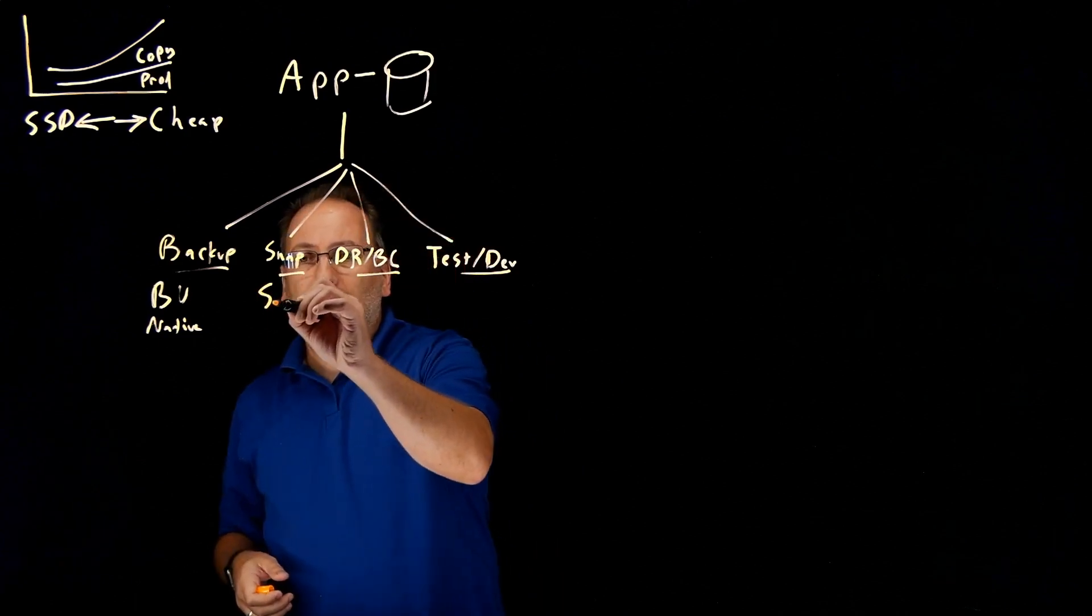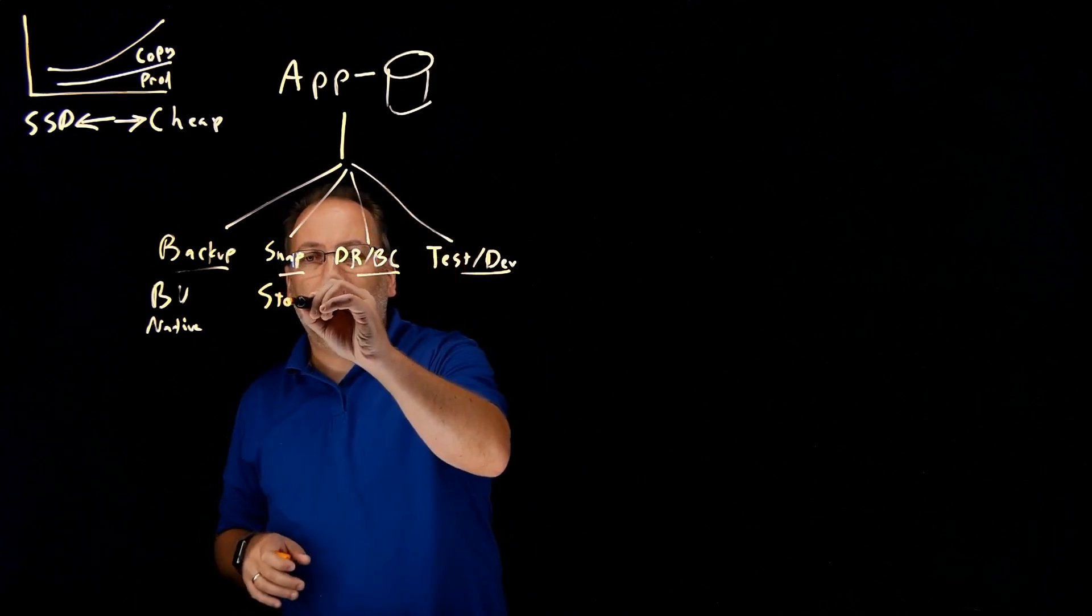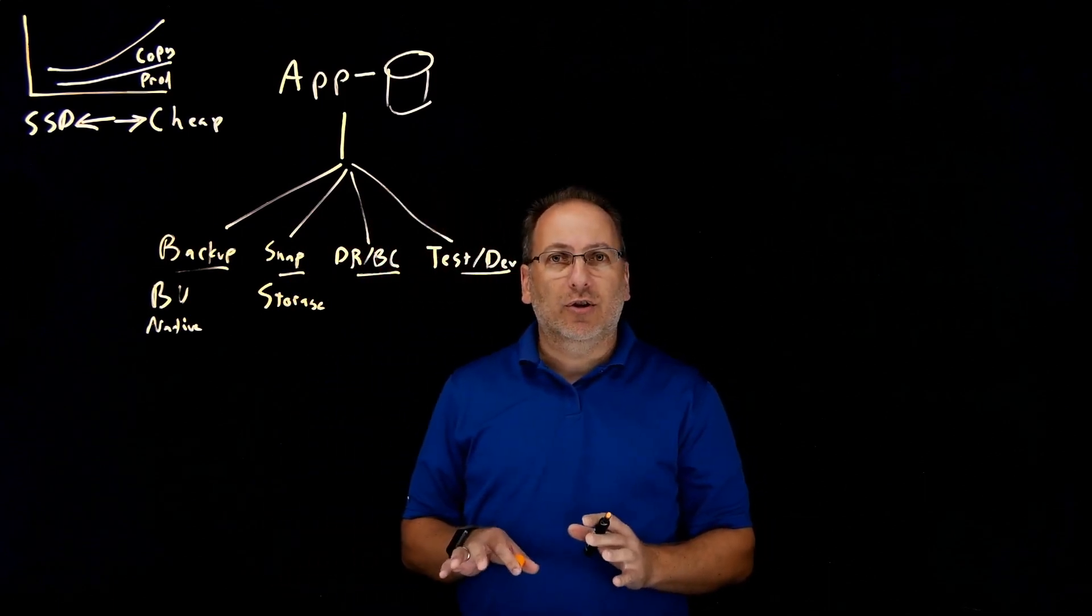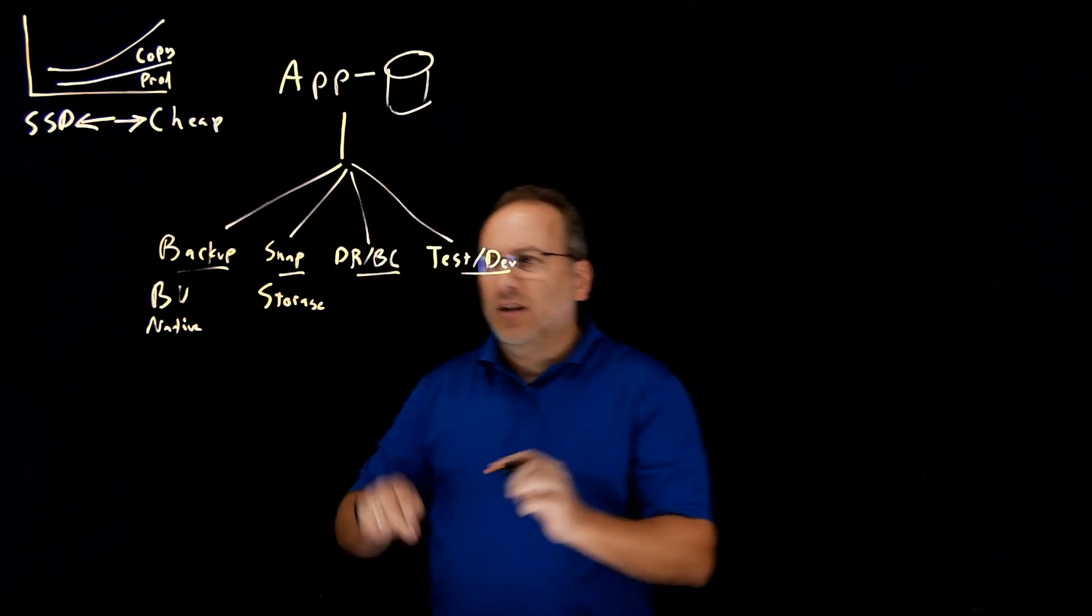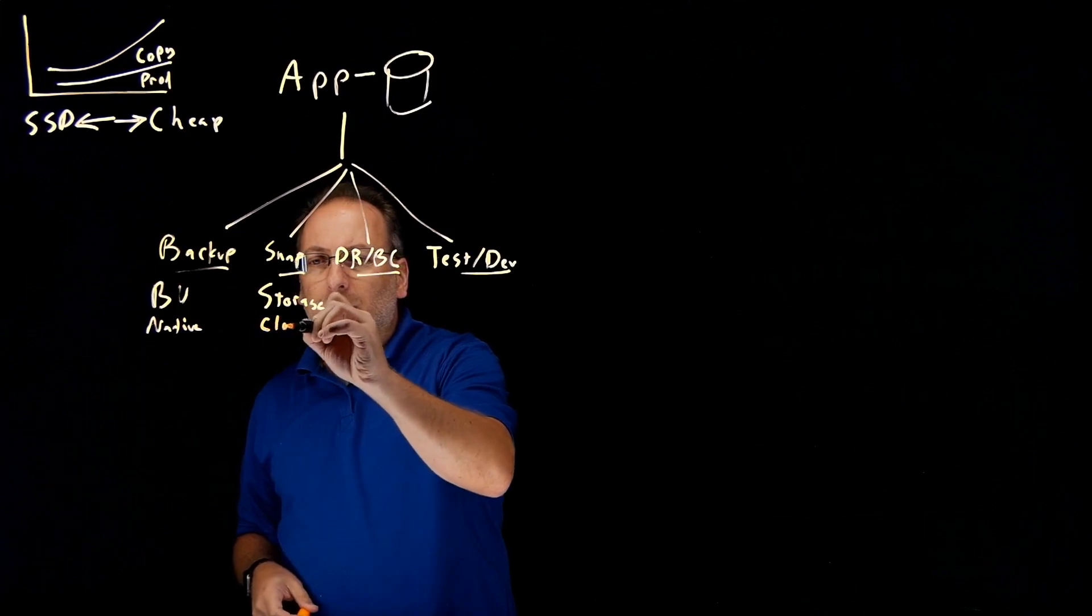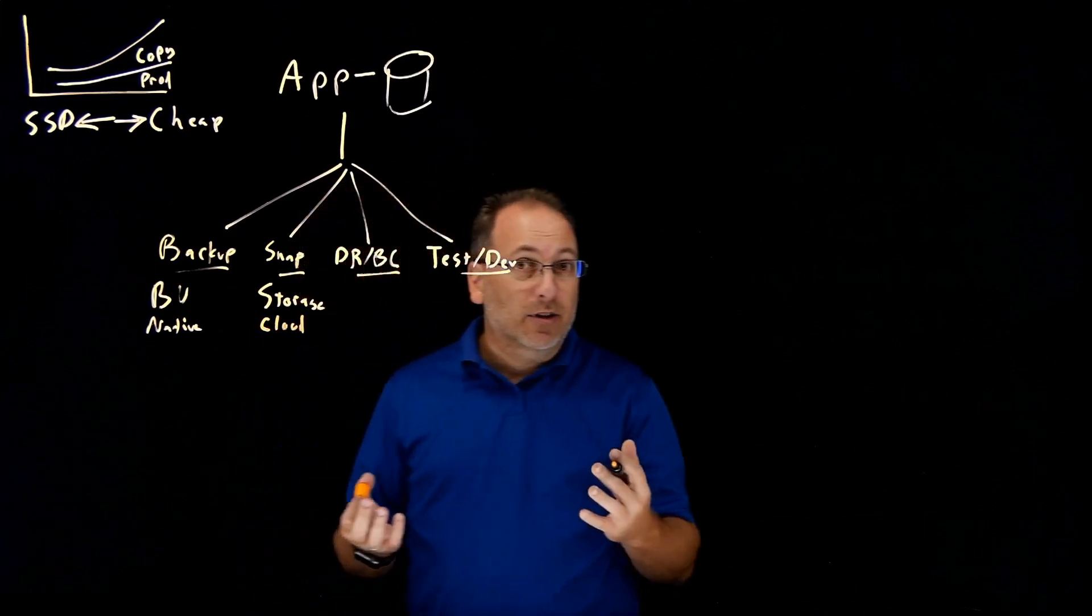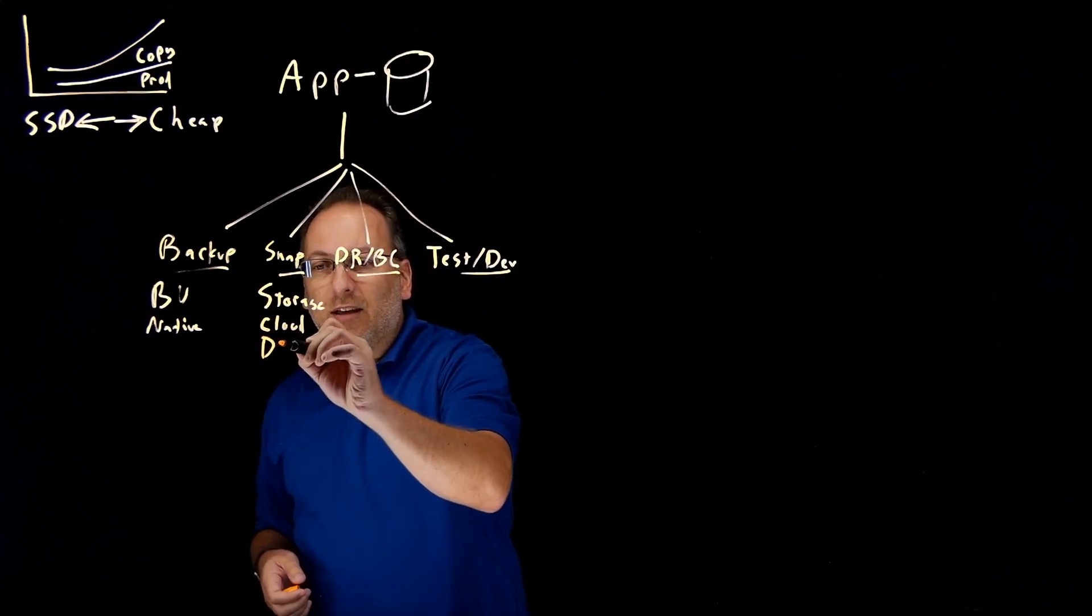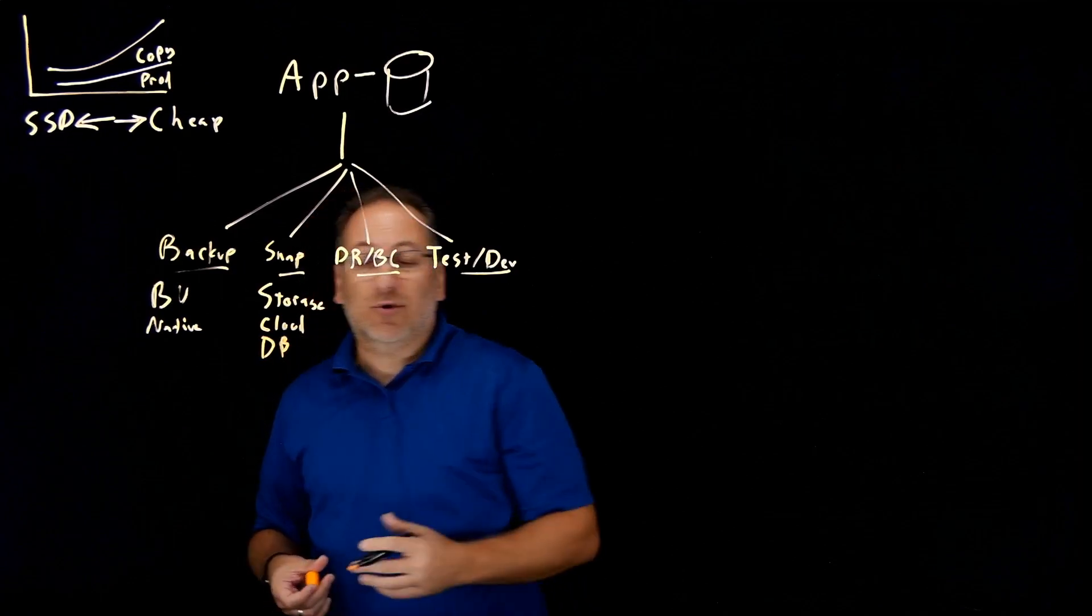In the next column here, you have your snapshots. And snapshots, most often, are being created by your storage. They're storage array snapshots. Sometimes these are being created in the cloud, if you're working with cloud workloads. And other times, these can even be things like database snapshots, for example.